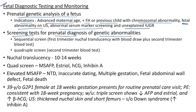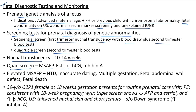Screening tests for prenatal genetic diagnosis: sequential screen — first-trimester nuchal translucency with blood test plus second-trimester blood test. Quadruple screen is done in the second trimester and includes maternal serum AFP, estriol, HCG, and inhibin A. Nuchal translucency is done at 10 to 14 weeks. Differential diagnosis for elevated maternal serum AFP: neural tube defect, inaccurate dating, multiple gestation, fetal abdominal wall defect, and fetal death.